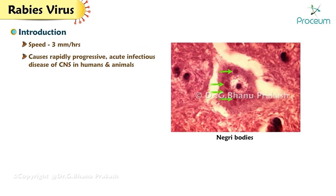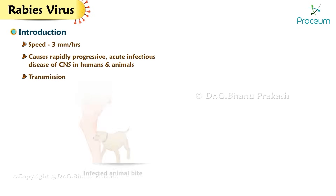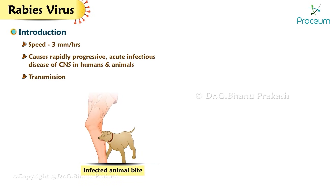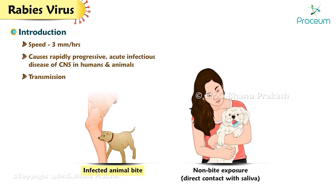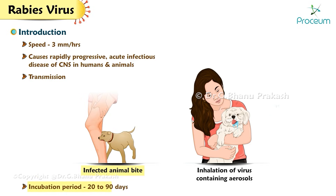Rabies causes a rapidly progressive acute infectious disease of the central nervous system in humans and animals. It is most commonly transmitted by a bite from an infected animal, most commonly a dog. Non-bite exposure occurs via direct contact with saliva of infected animals or inhalation of virus-containing aerosols. The incubation period is 20 to 90 days.